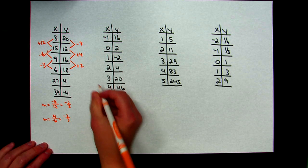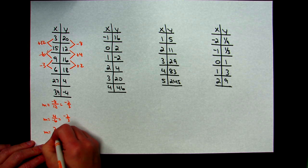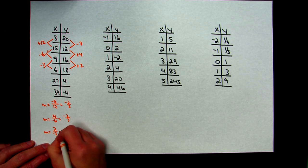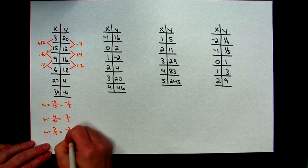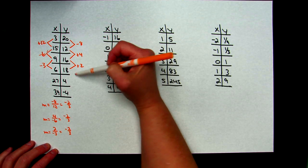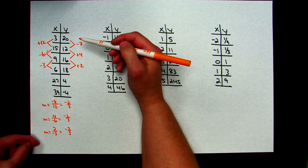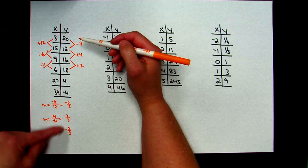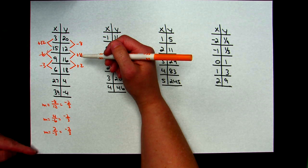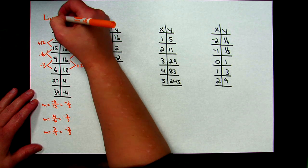So not just checking whether the common difference is in the y-column — going ahead and checking the slope will definitely show you. This is sufficient to confirm that this is definitely a linear model.